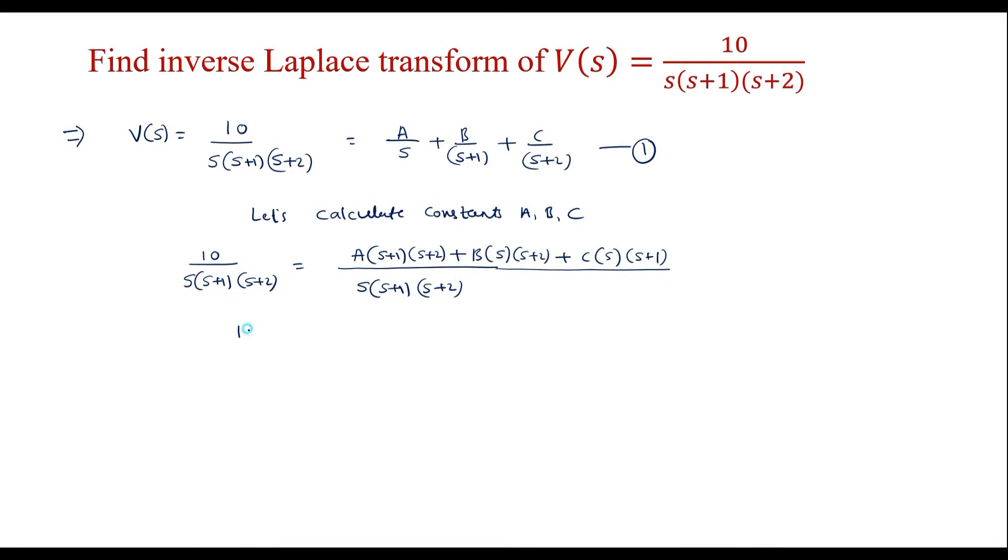This can be represented as 10 equals, the denominator terms will get cancelled, A(s+1)(s+2) plus B·s(s+2) plus C·s(s+1). We will call it equation 2.